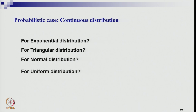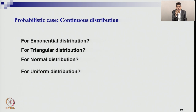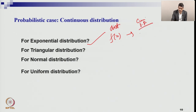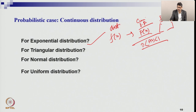Now let us go to the continuous case of simulation, where the input data will not be discrete. In previous examples, data sets were considered as discrete events with corresponding frequency and probability, making cumulative and interval calculation straightforward. But when inter-arrival time of customers in a waiting line follows an exponential distribution, the distribution function is exponential and you cannot directly create random number intervals as in the discrete case. We need a different scheme.